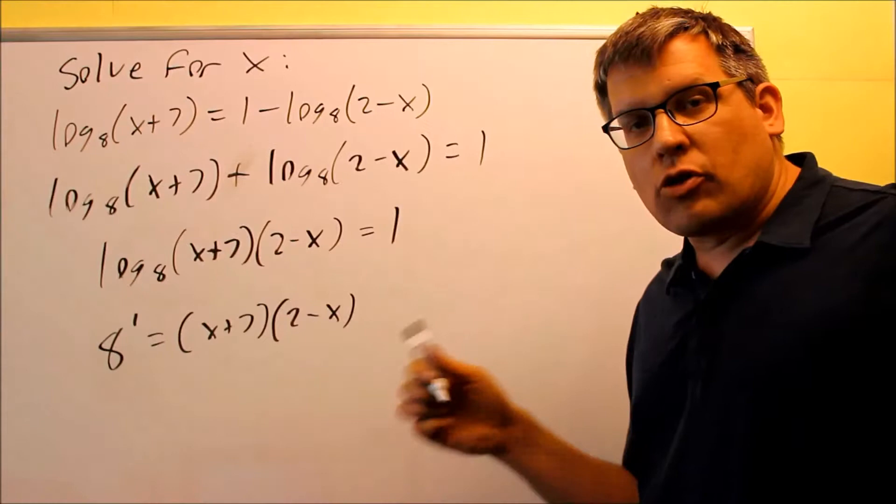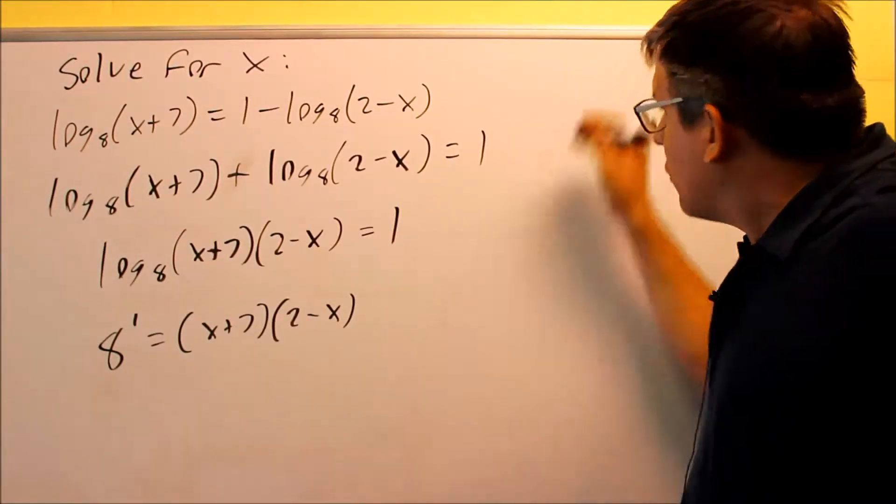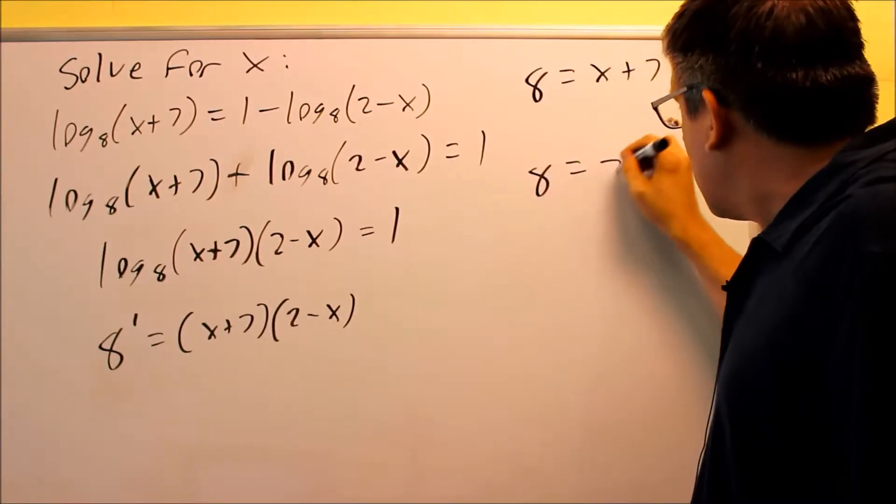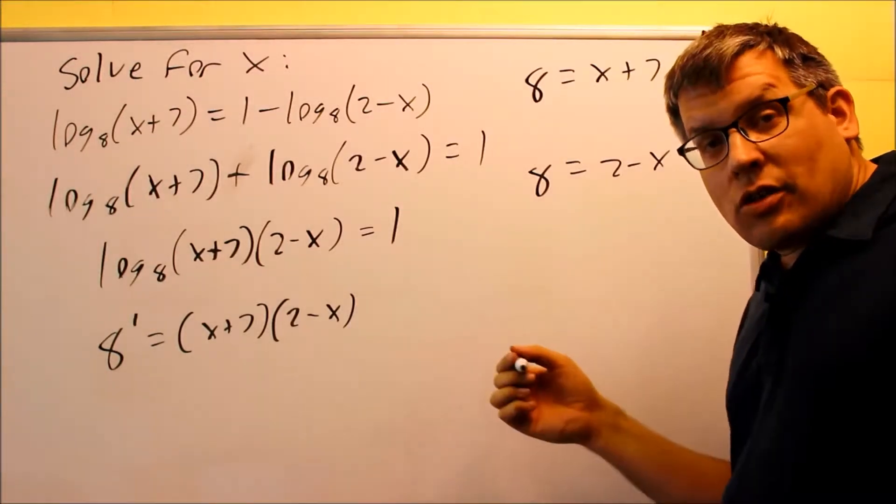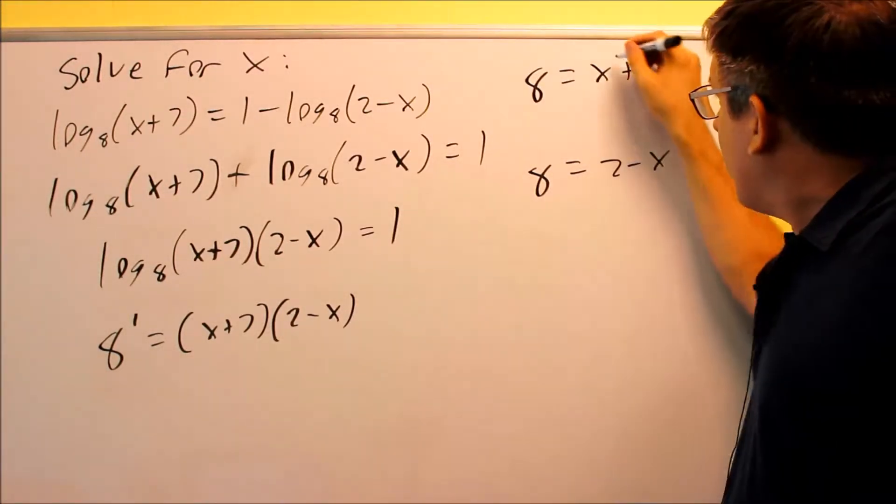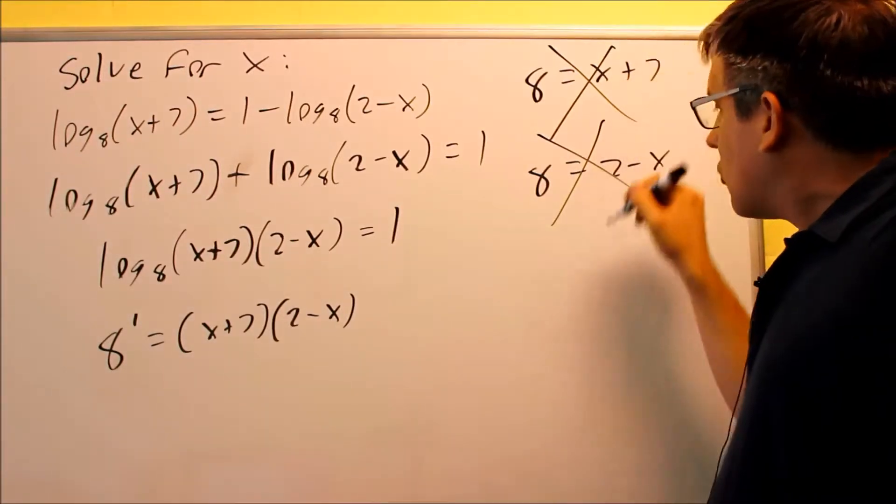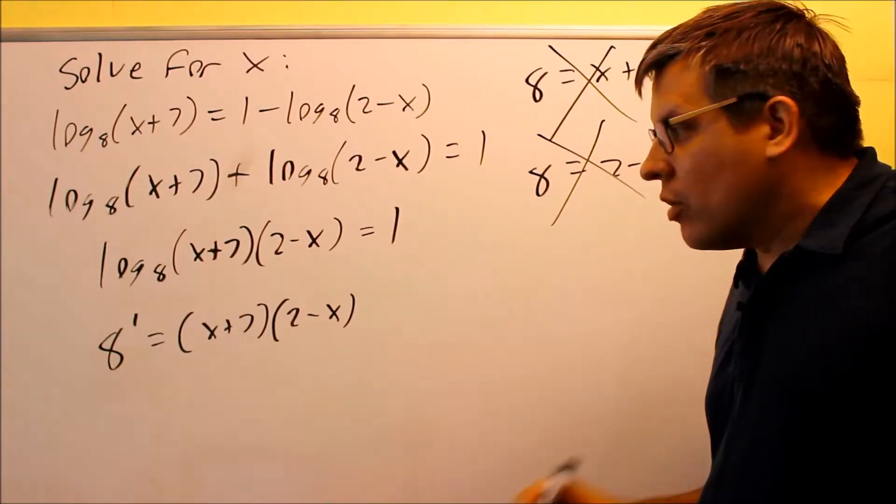So 8 to the first power, of course, would just be 8. So a question for you, are you allowed to do this and this to solve for our answer? The answer to that is actually going to be no. Please don't do this one. You definitely do not want to do that step. That is wrong because that only works if you have a 0 there for both of those.